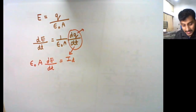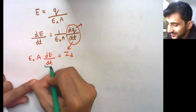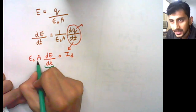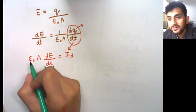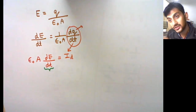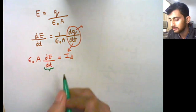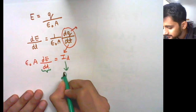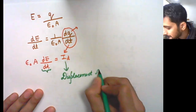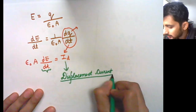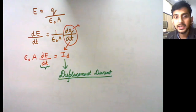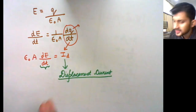This current, which arises because of the change in electric field, is called displacement current, denoted Id. If the electric field changes with time, with area A and permittivity epsilon of the dielectric material inside the capacitor, a special kind of current is produced — that is displacement current Id. If the source is such that the electric field does not change with time, meaning dE/dt equals zero, then displacement current is also zero.